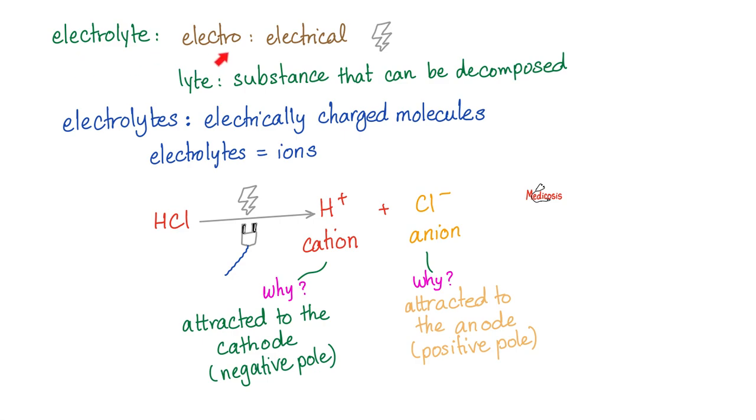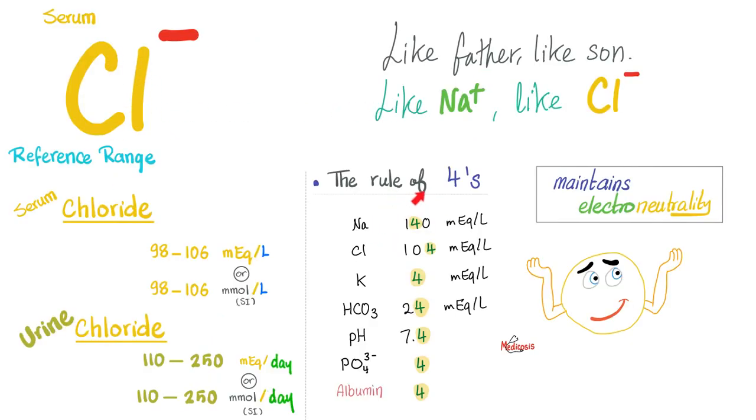Chloride is an electrolyte. What does that mean? Electro means electrical, lyte means decomposition, which means these are molecules that can be decomposed into positive charges and negative charges. That's an anion, which means it's an electrolyte - separation via electricity. To remember the serum chloride level, just remember my rule of fours. Normal sodium in the blood is 140. Chloride? Just 104. Bicarbonate, 24. pH, 7.4. Potassium, phosphate, albumin, around 4. Thyroid-stimulating hormone TSH, 0.4 until 4.